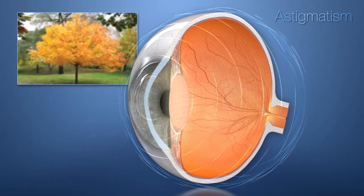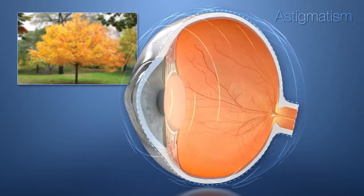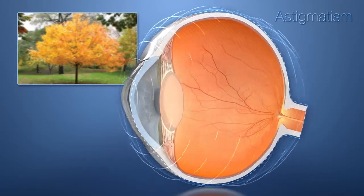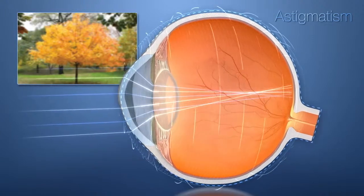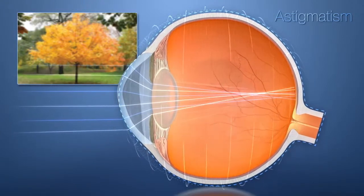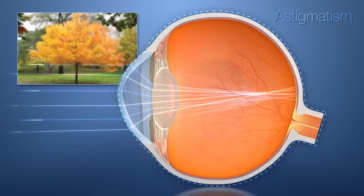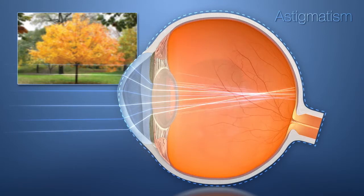With astigmatism, the cornea is misshapen and has more of an oblong shape, like an oval, causing light to bend and distort as it passes through the lens. This makes objects appear blurry or unfocused at all distances because light rays are not focused on one spot to provide clear vision.